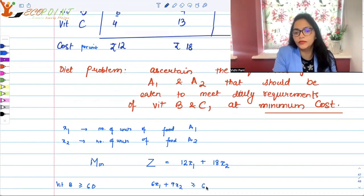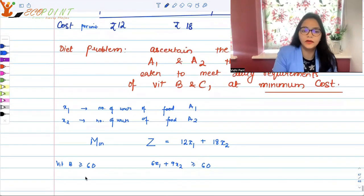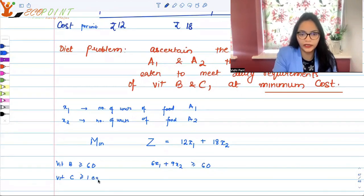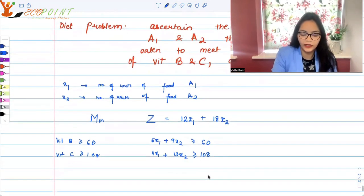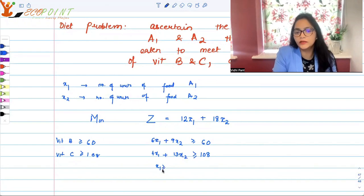What is happening, what I require - in total I require vitamin B. For vitamin B, it needs to be more than or equal to 60, right? Minimum requirement is that. I am getting 6 from A1 and 9 from A2, so 6x1 + 9x2 should be greater than or equal to 60. For vitamin C, it has to be greater than or equal to 108. I am getting 4 from A1, so 4x1 + 13x2 should be greater than or equal to 108. And of course, the number of units has to be positive, so x1, x2 both are greater than or equal to 0.